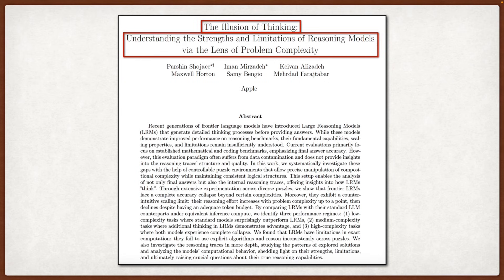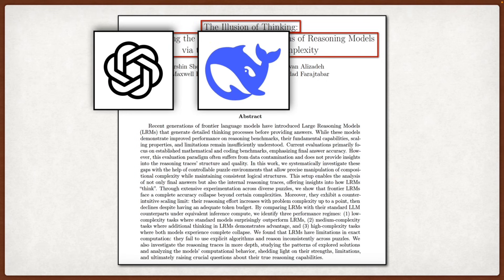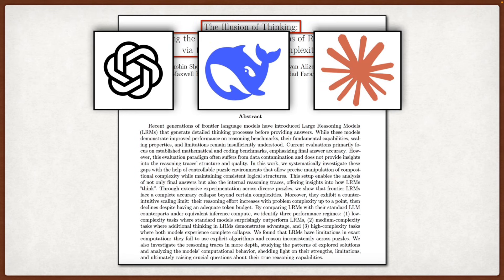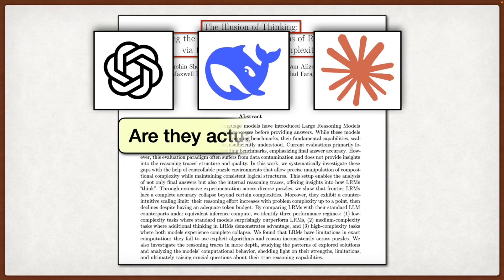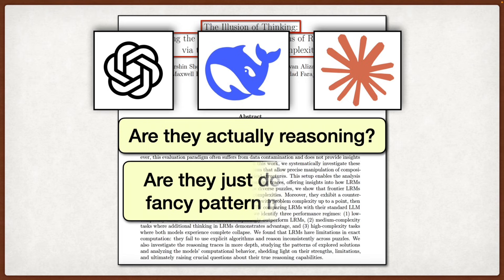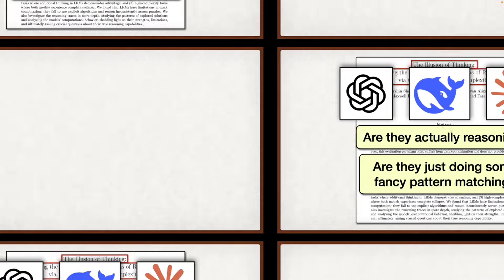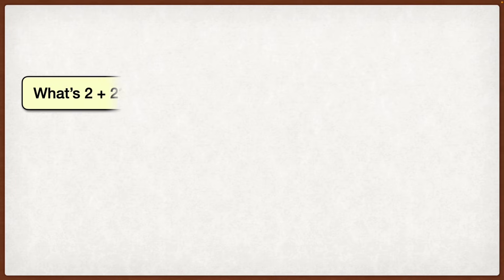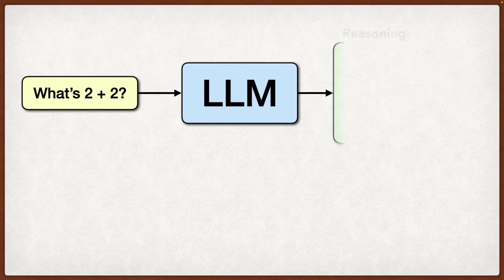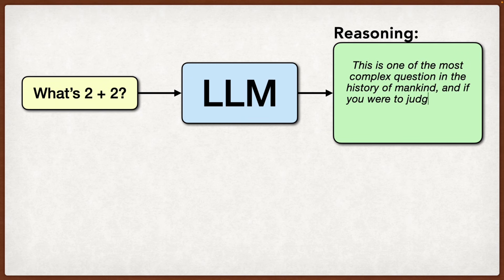The paper tackles what I think is a really important question about these new reasoning models like OpenAI's O1, DeepSeek R1, and Claude's thinking variants. Basically, are they actually reasoning or are they just doing some fancy pattern matching with extra tokens? The core idea behind large reasoning models is that they generate these detailed thinking processes before giving you their final answer, and they've shown some pretty impressive results on reasoning benchmarks.